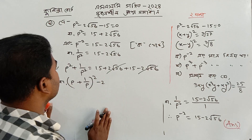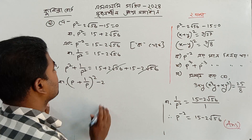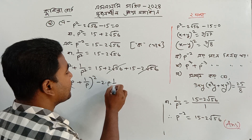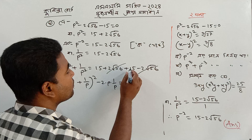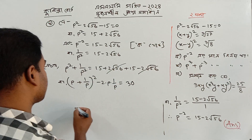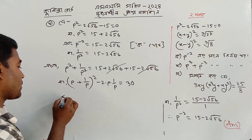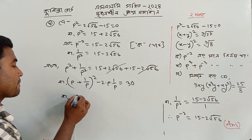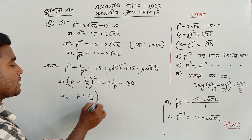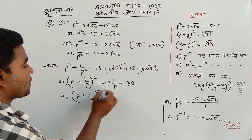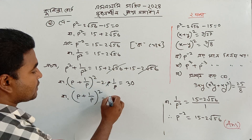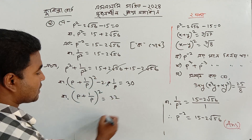You can learn: minus 2ab equal to 3. p plus 1 by p, whole square, a minus 2 a plus 2 — that means...